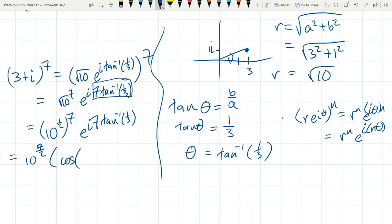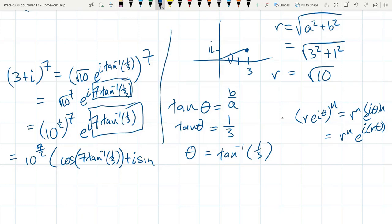We have cosine of theta, which I'm putting in a box. Plus i sine. Now I'm totally running out of room. I apologize for that. Sine of 7, tan inverse 1 third. I think I need a third closed parenthesis. Okay. We're almost done.